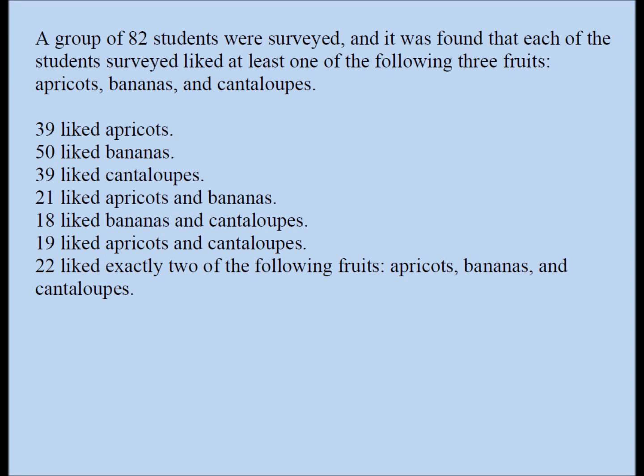A group of 82 students were surveyed and it was found that each of the students surveyed liked at least one of the following three fruits: apricots, bananas, and cantaloupes. 39 liked apricots, 50 liked bananas, 39 liked cantaloupes, 21 liked apricots and bananas, 18 liked bananas and cantaloupes, 19 liked apricots and cantaloupes, and 22 liked exactly two of the following fruits: apricots, bananas, and cantaloupes.